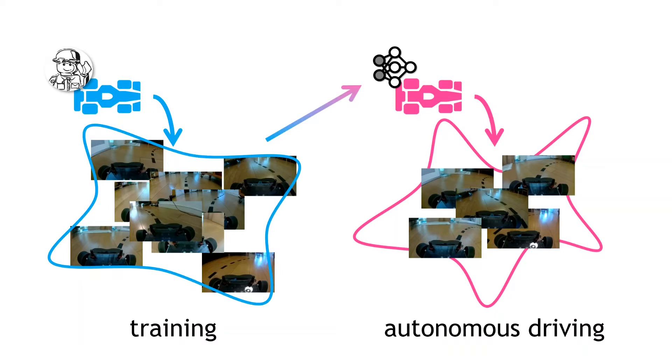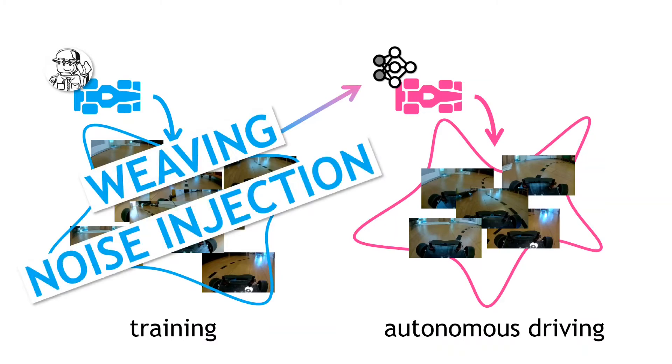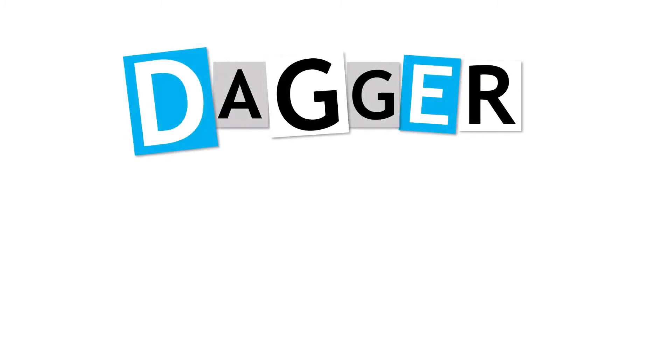In a previous video, I looked at two simple tweaks to behavior cloning that try and expand the range of the training data. They were the weaving and noise injection approaches. Now on to DAGAR.